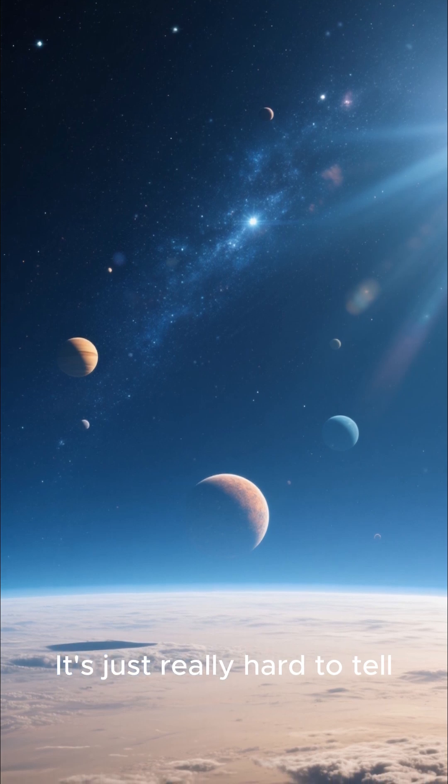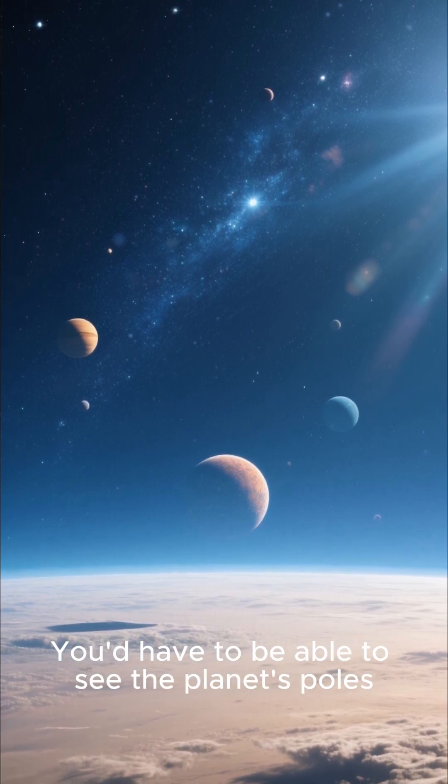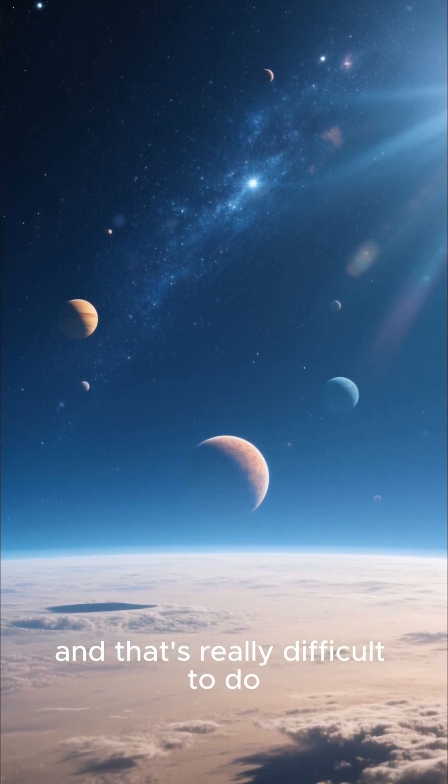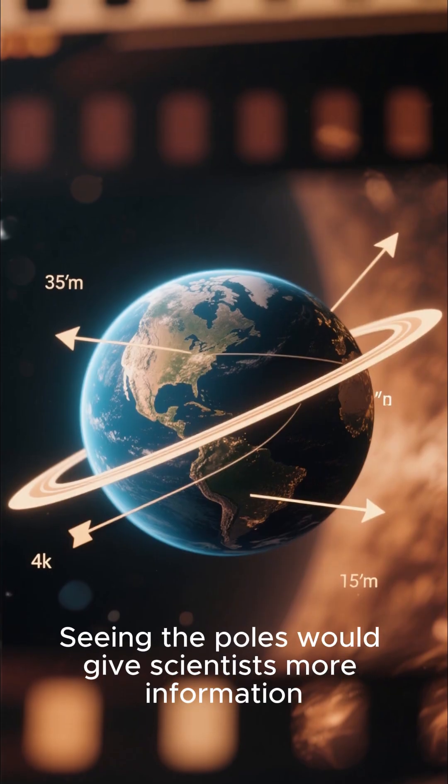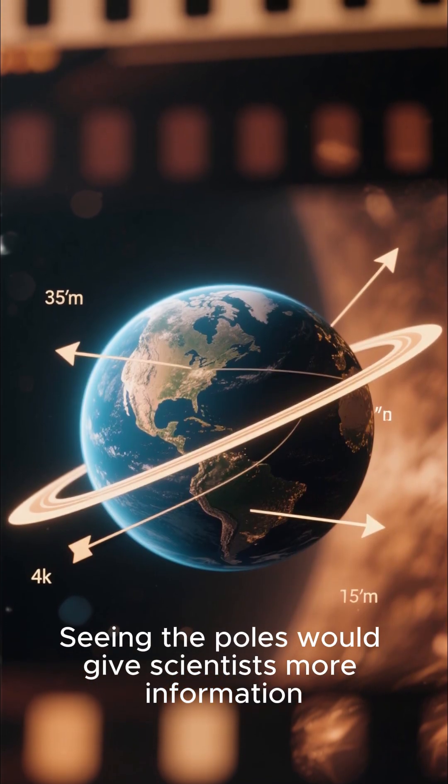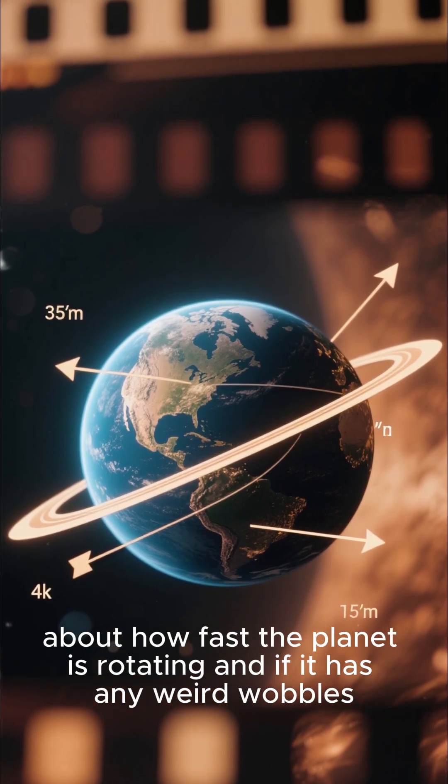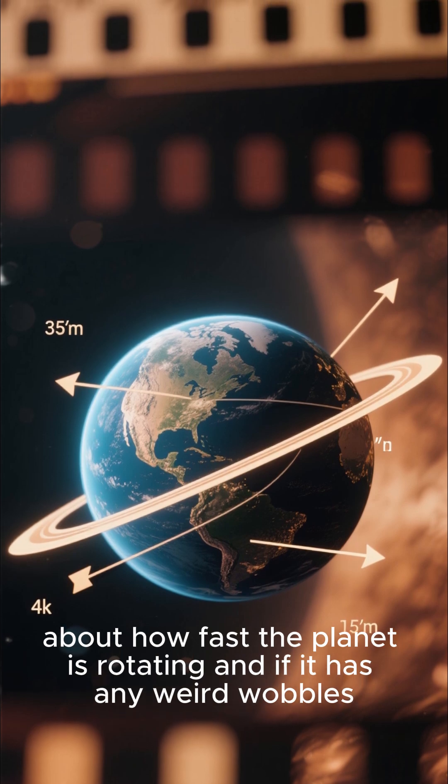It's just really hard to tell. You'd have to be able to see the planet's poles, and that's really difficult to do. Seeing the poles would give scientists more information about how fast the planet is rotating and if it has any weird wobbles.